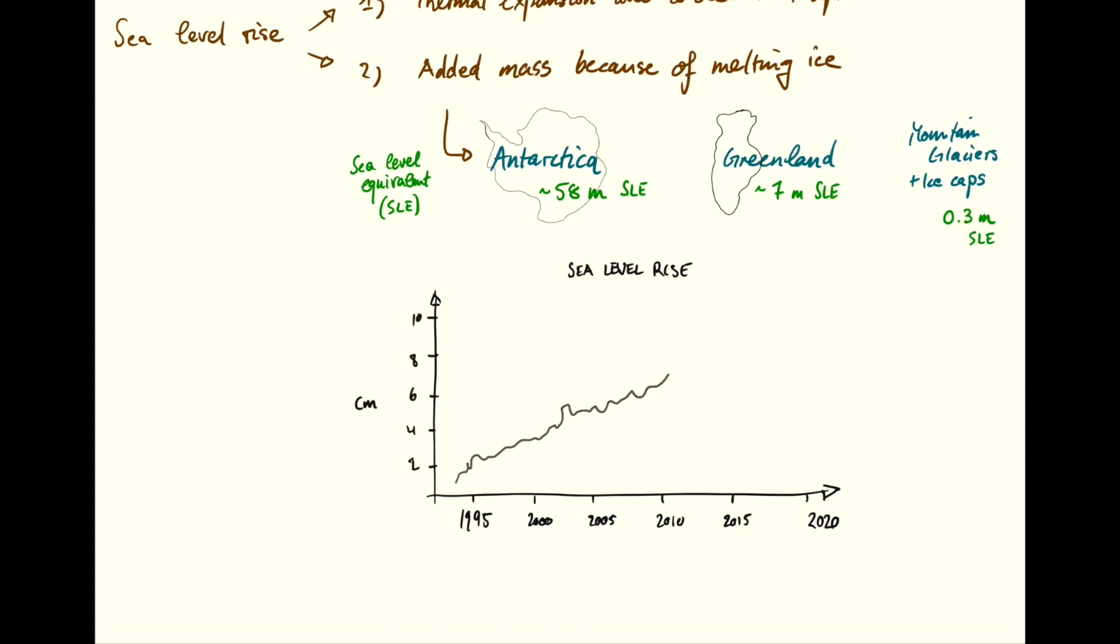And the line is rather wiggly, so take this with a grain of salt, my representation here. And the measurements are taken mostly from satellites. And so this here is the global sea level anomaly.